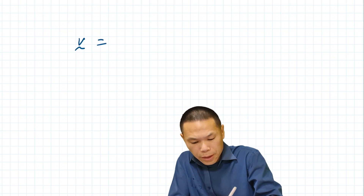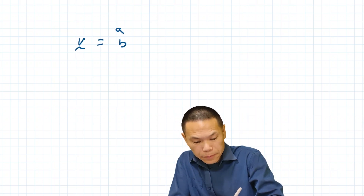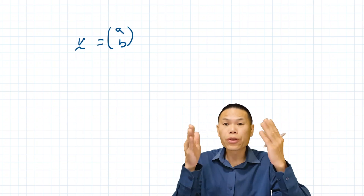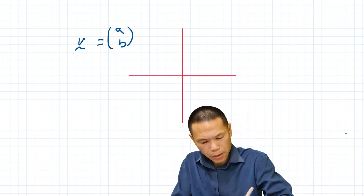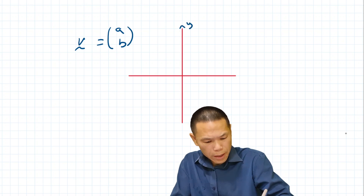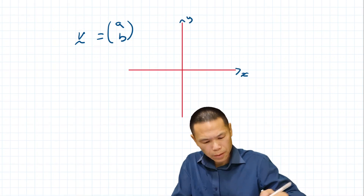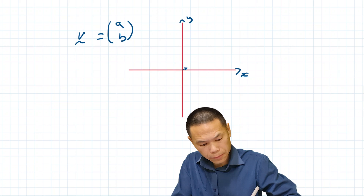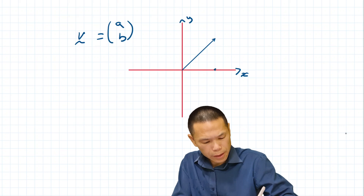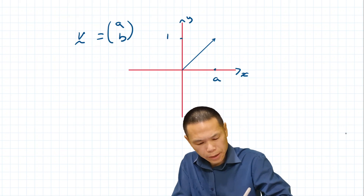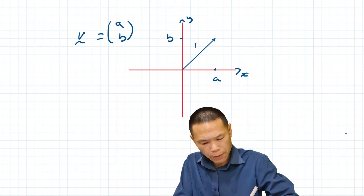Let's say we have a vector — let's say vector V is equal to (A, B). So let's plot this on the Cartesian plane. This is Y and this is X. The vector V is here; this is A and this is V.